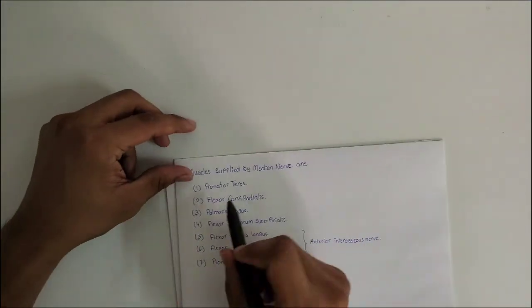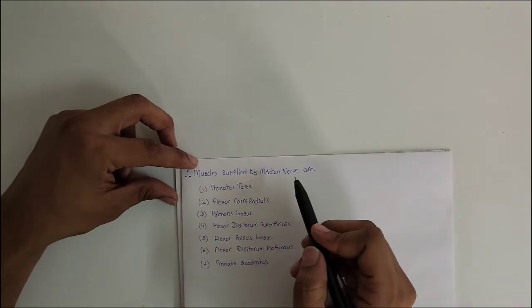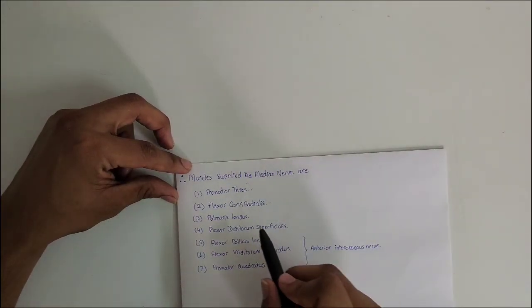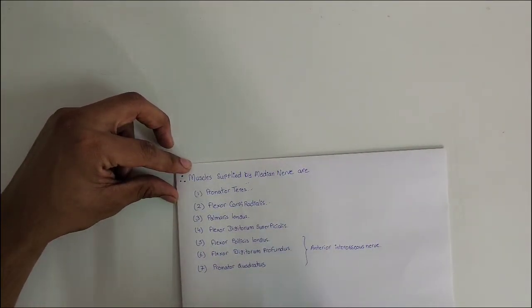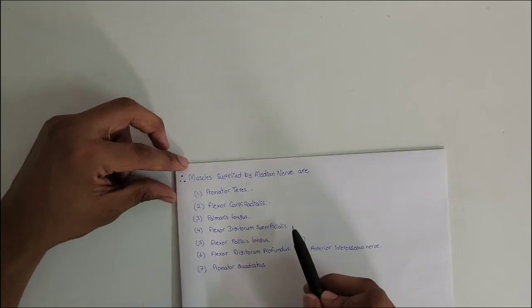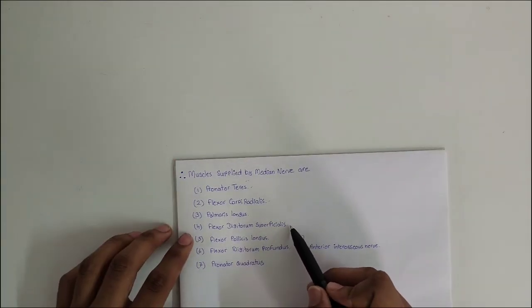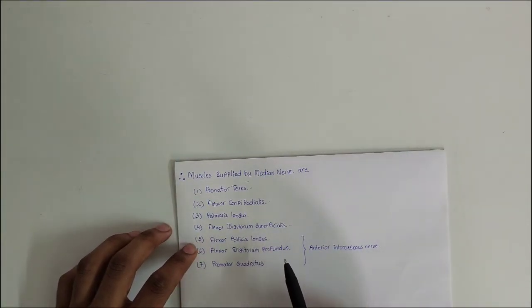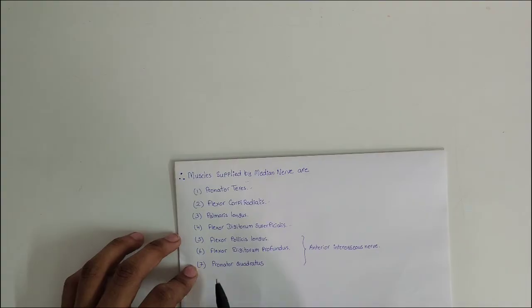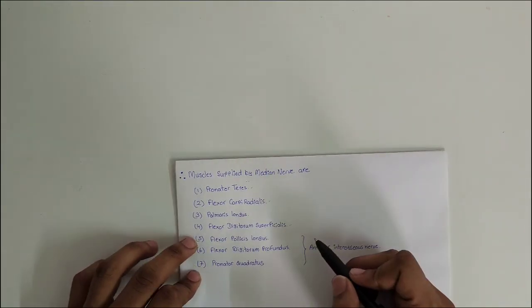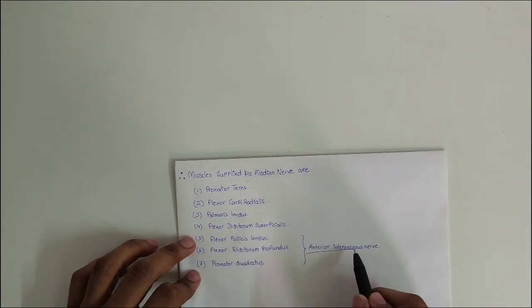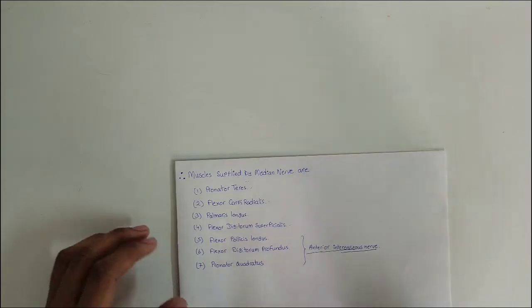To recap, the muscles supplied by the median nerve are: pronator teres, flexor carpi radialis, palmaris longus, flexor digitorum superficialis, flexor pollicis longus, flexor digitorum profundus, and pronator quadratus. The last three — flexor pollicis longus, flexor digitorum profundus, and pronator quadratus — are supplied via the anterior interosseous nerve.